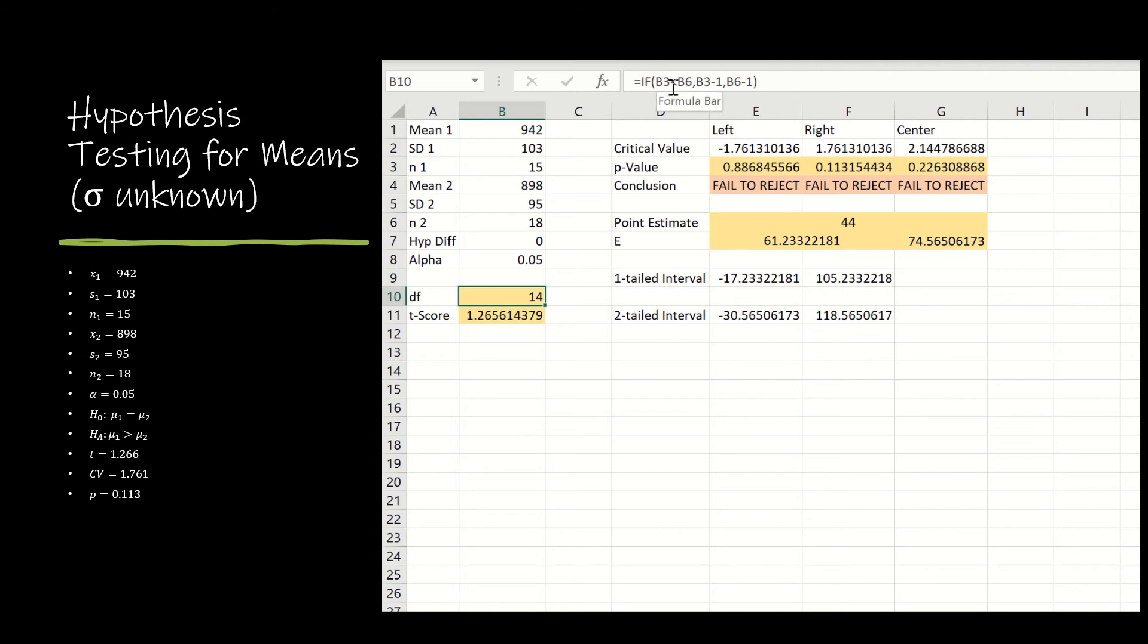so if b3 is less than b6, I want degrees of freedom to be b3 minus 1, 15 minus 1, which is 14. If it's not, I want it to be b6 minus 1, which is 18 minus 1, or 17. Now obviously, 14 is the lesser of the two, so the formula or function, excuse me, has worked correctly.